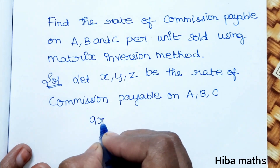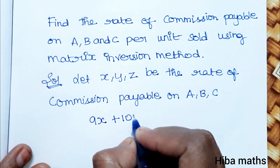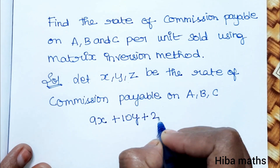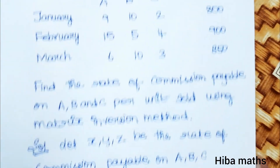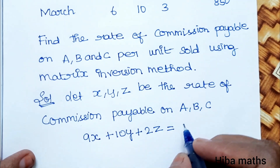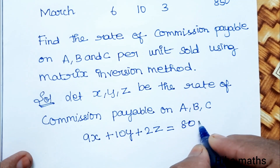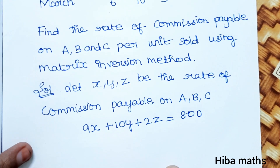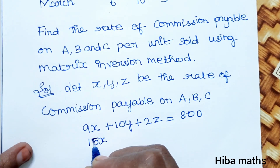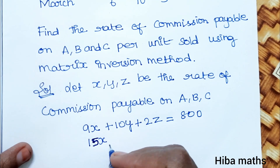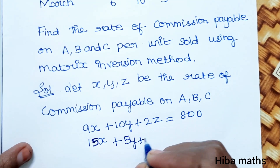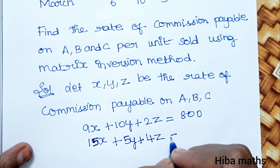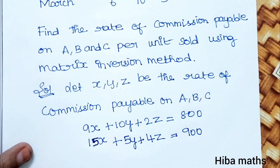The first equation: 9x + 10y + 2z = 800. This is the first equation. For February: 15x + 5y + 4z = 900.